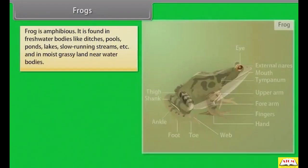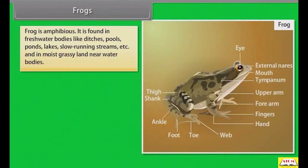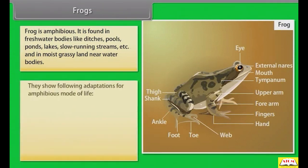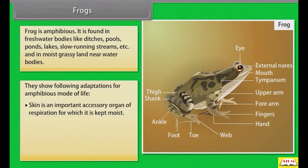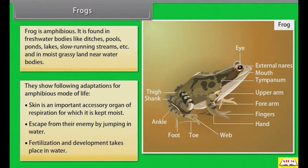Frog is amphibious and is found in freshwater bodies like ditches, pools, ponds, lakes, and slow-running streams, as well as in moist grassy land near water bodies. Frogs show adaptations for an amphibious mode of life. The skin is an important accessory organ of respiration and is kept moist. Frogs escape from enemies by jumping into water, and fertilization and development take place in water.